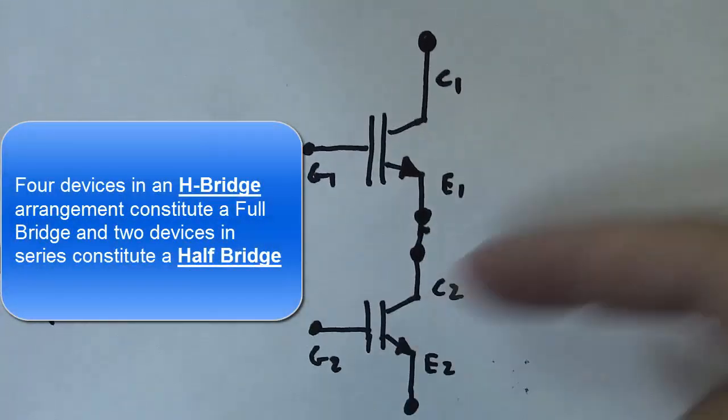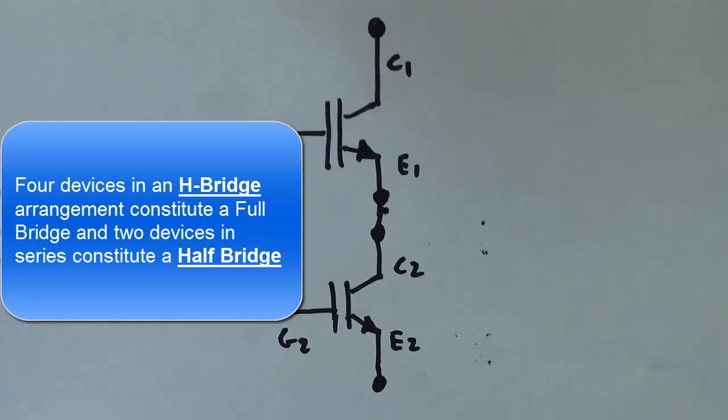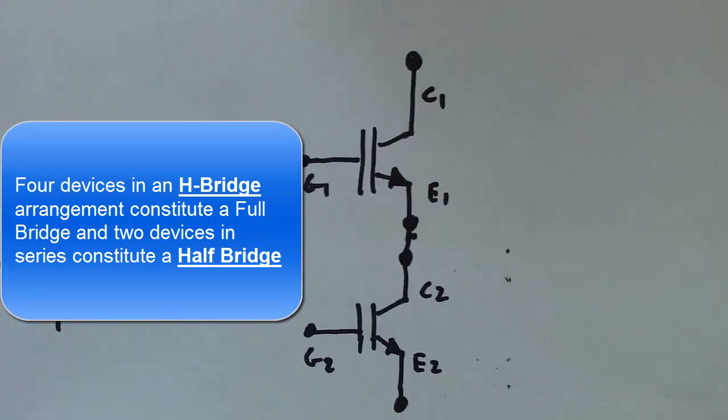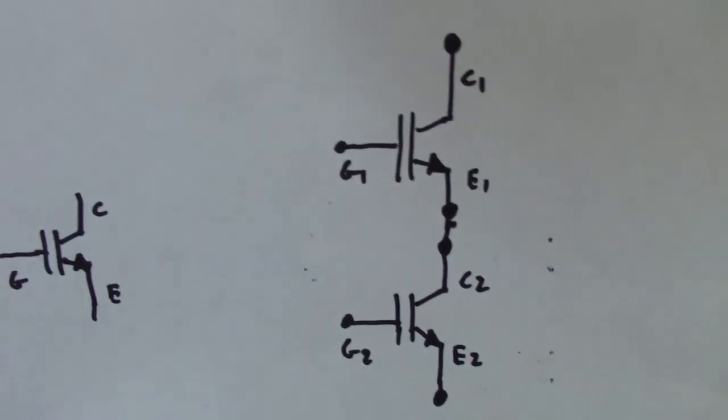We have two gates, gate one and gate two. And this is the way they're labeled on the module, this brick module. Alright, so to test this, we really want to test each IGBT individually.